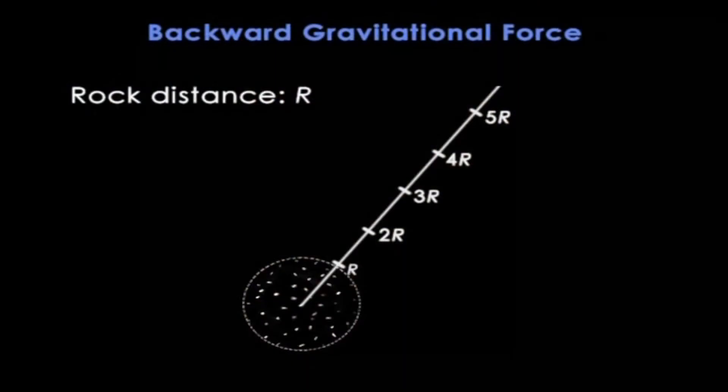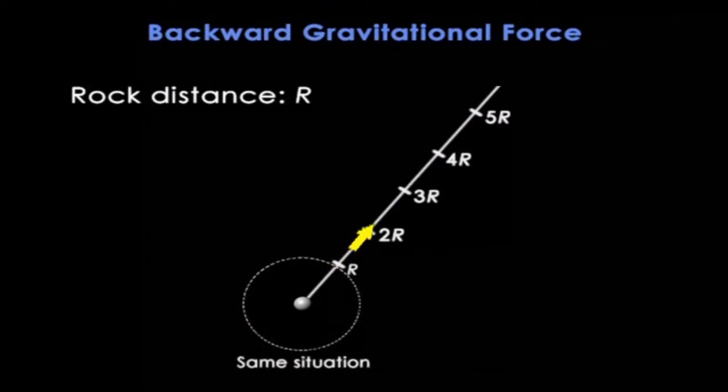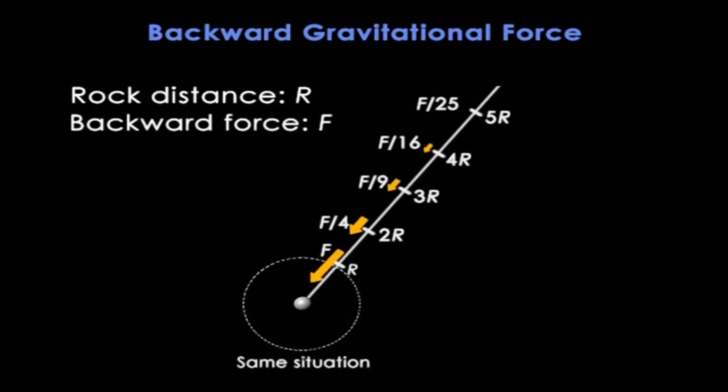So let's first look at the gravitational force around this sphere. It turns out it's exactly the same as if all the rocks were at the center, and it has the famous inverse square law, decreasing in strength with distance. Here are the forces shown as arrows.